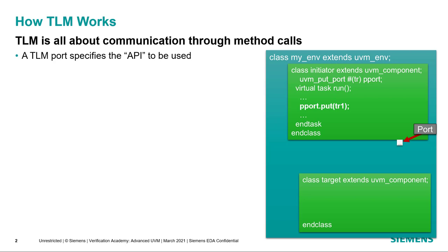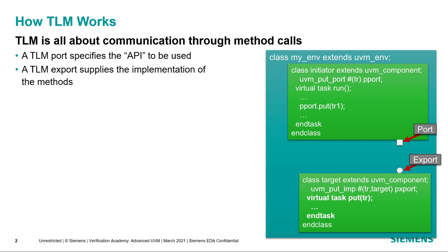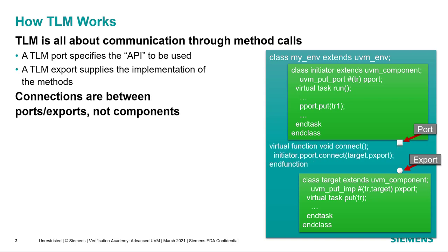In the target, we have what we call an export, which supplies the implementation of those methods. In these diagrams, we'll use squares to designate ports and circles to designate exports. The connection is between the port and the export. In the environment, we connect the initiator port to the target export by calling the connect method of the port and passing the export in as the argument. We do not actually connect one component to another, and this provides flexibility when we get into the factory.